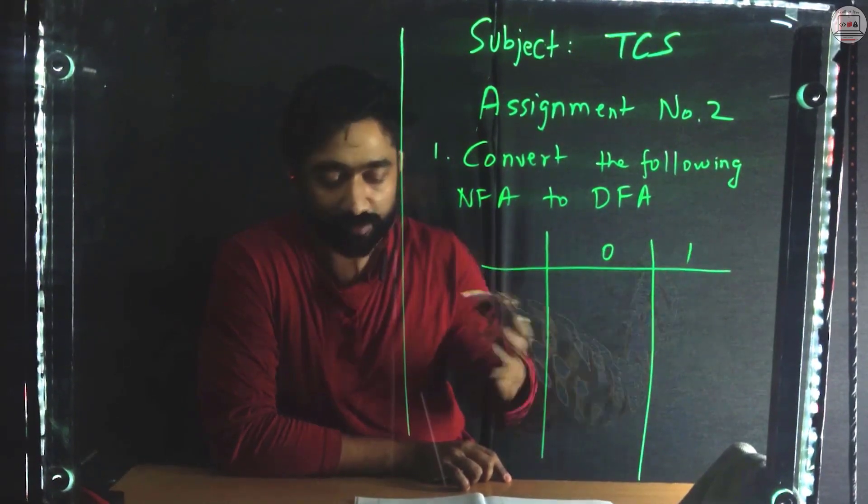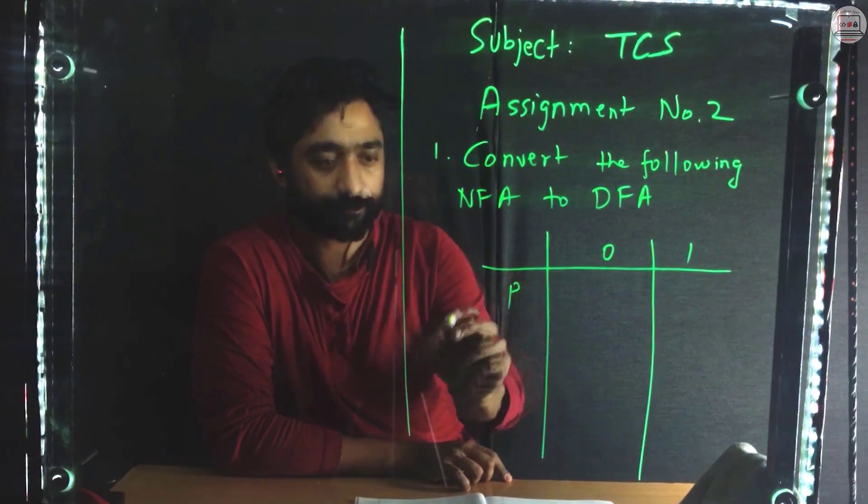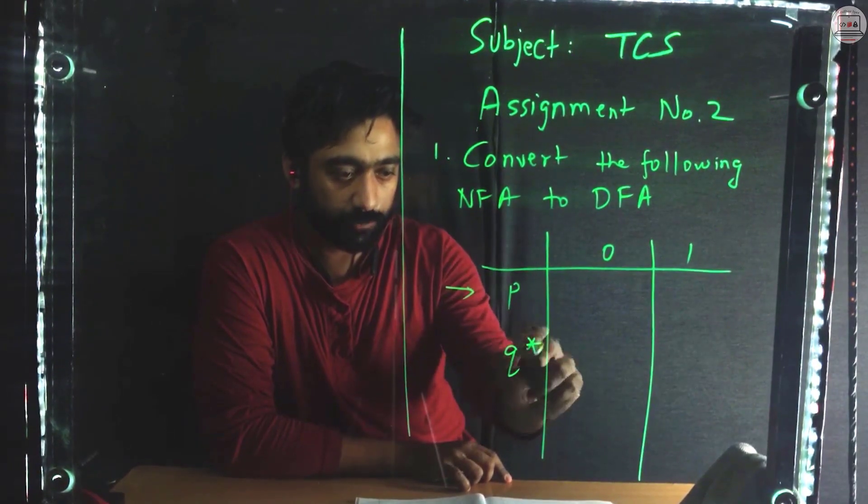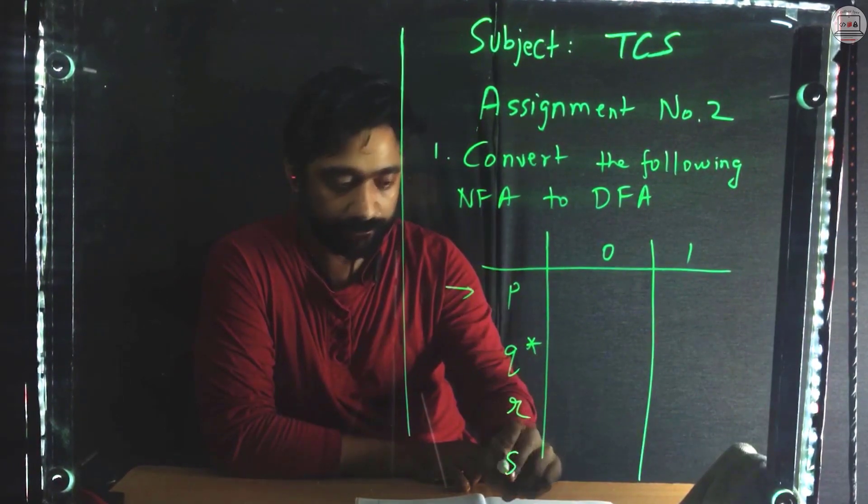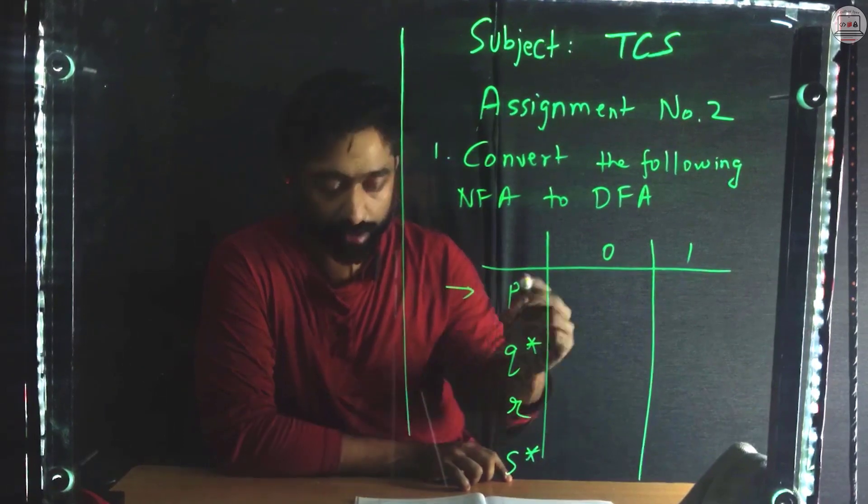For example, these are the states P, Q, R, and S dash. Let me write it over here.